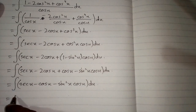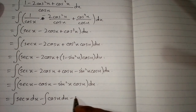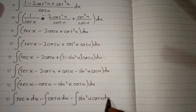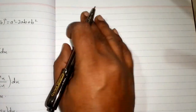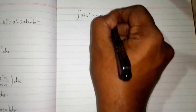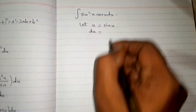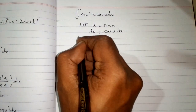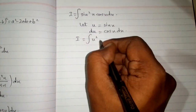Now we apply the integral to all the terms: integral of sec x dx, minus integral of cos x dx, minus integral of sin square x cos x dx. To evaluate the integral of sin square x cos x dx, we let u equal sin x, so du equals cos x dx. This transforms the integral into the integral of u square du.